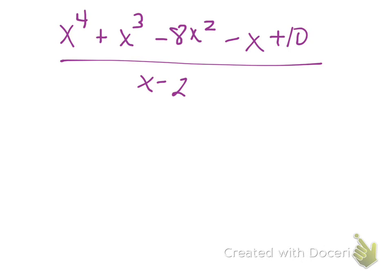So we're going to work on an example here of polynomial division. I'm taking x to the 4th plus x to the 3rd minus 8x squared minus x plus 10, and I'm dividing that by x minus 2.